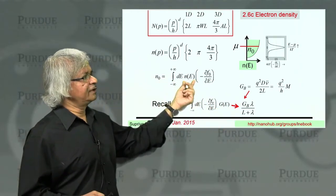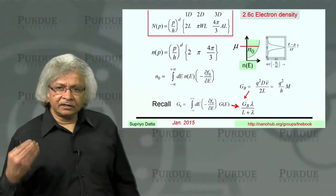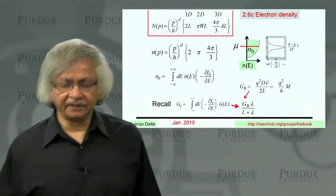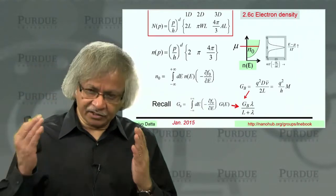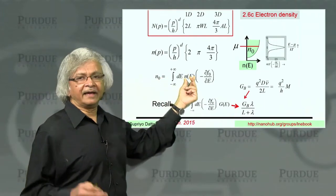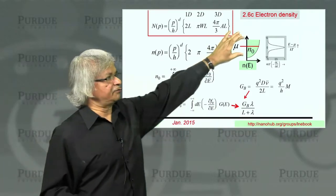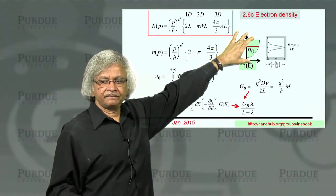We now have an expression, a quantity N of E here, which tells you the electron density. And the understanding is, at zero temperature, the electron density is just whatever N happens to be at E equals mu. At non-zero temperatures, you have to average.